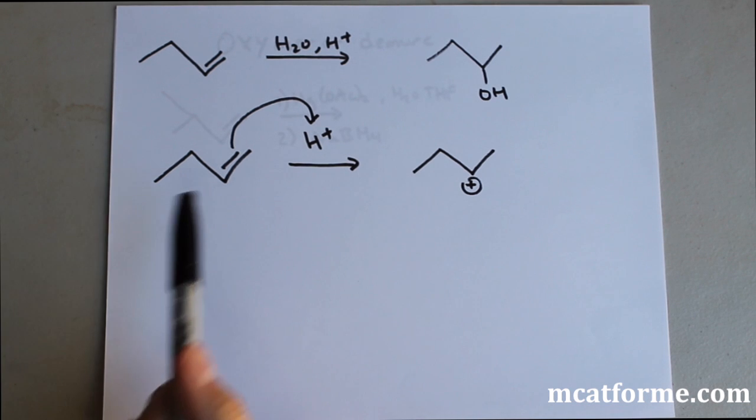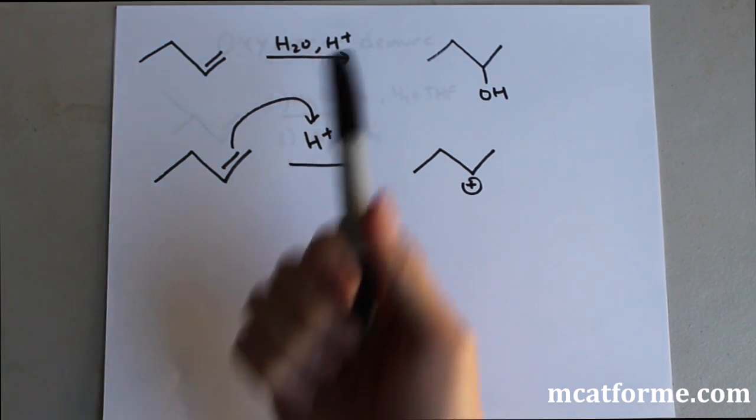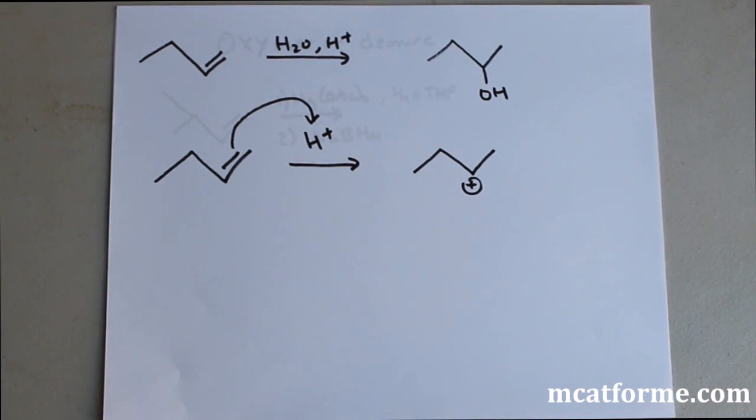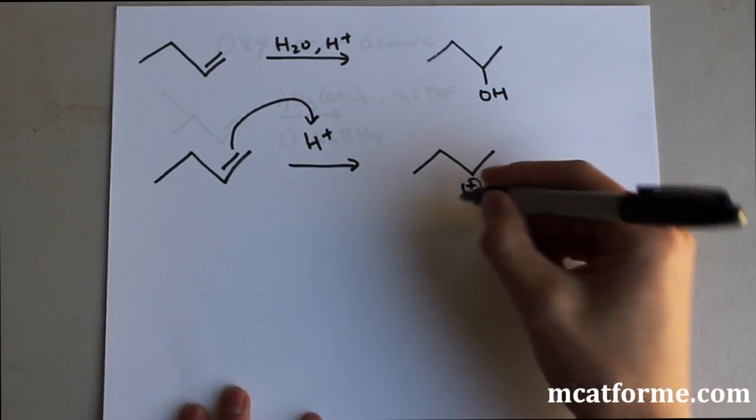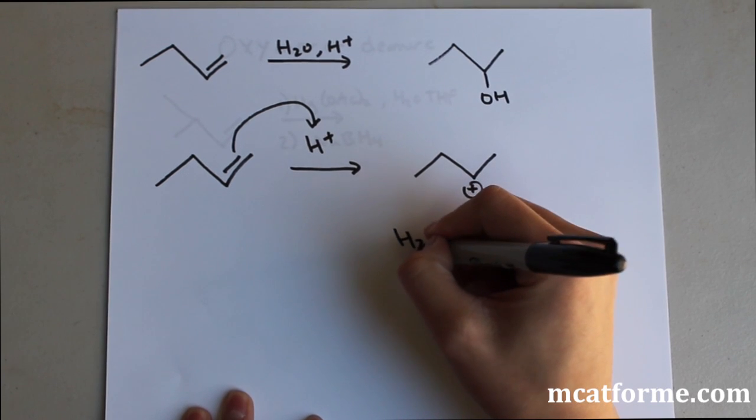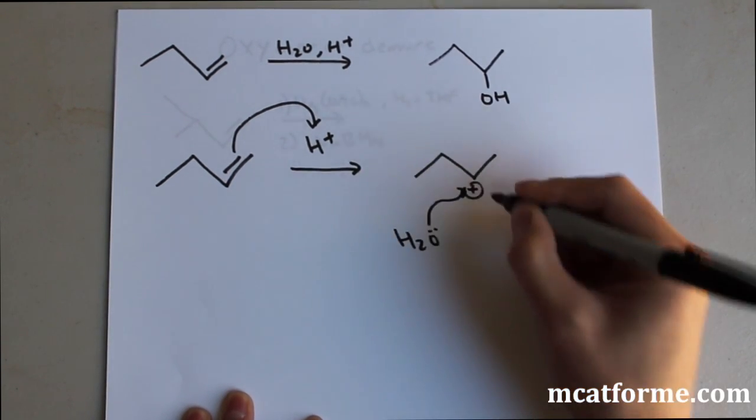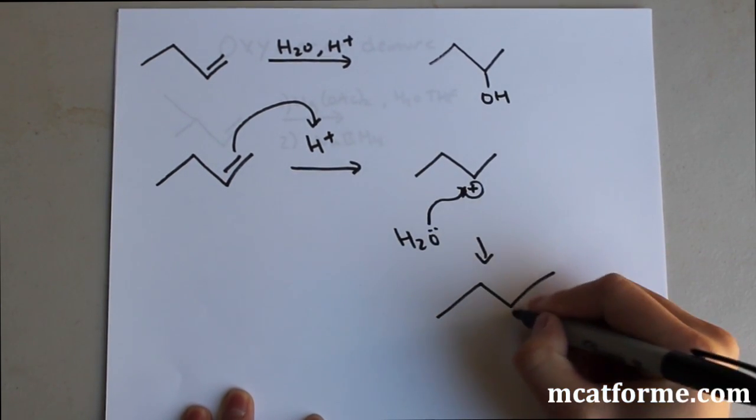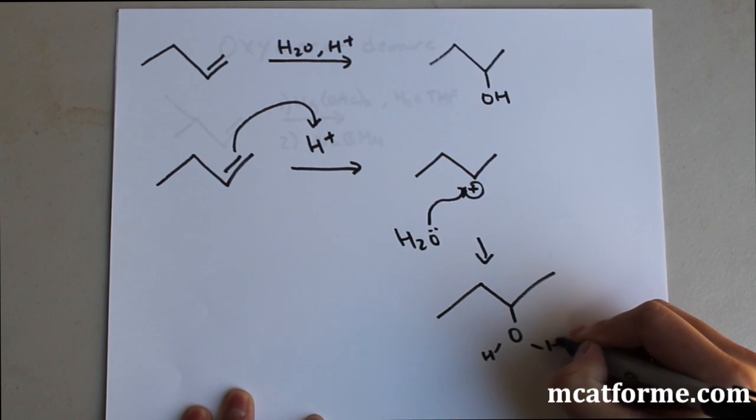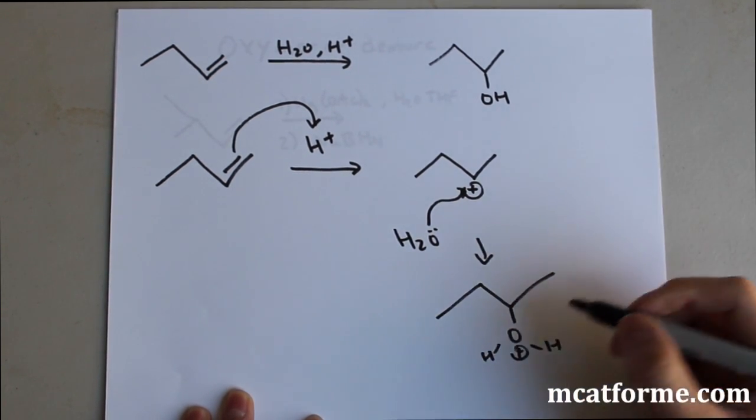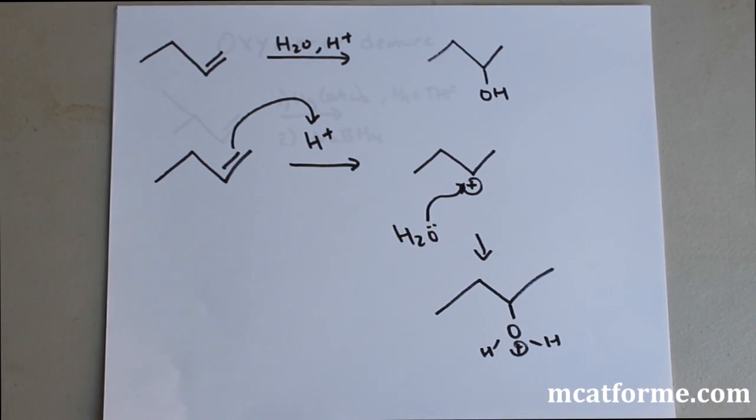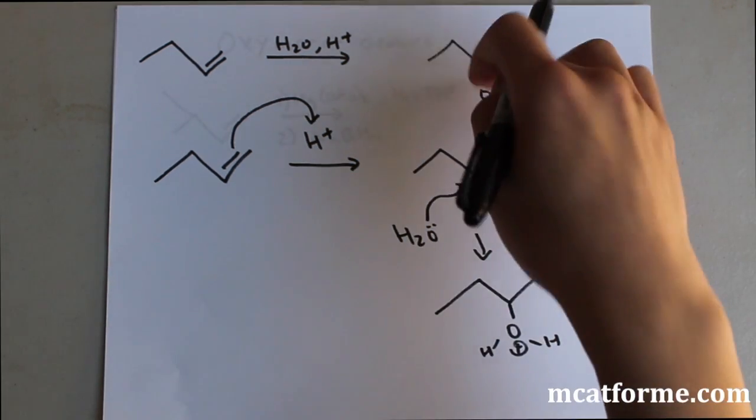Alright so what's going to happen is we're going to react this H plus and this H plus can come from stuff like H2SO4, HCl and so that H plus can react with a double bond from the carbocation right here and what's going to happen is that this H2O is going to attack right there and we're going to have a positive charge on the OH and like you can think of before we're going to have a hydrogen deprotonation so then we're going to form that product up there.